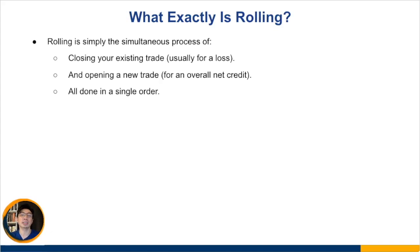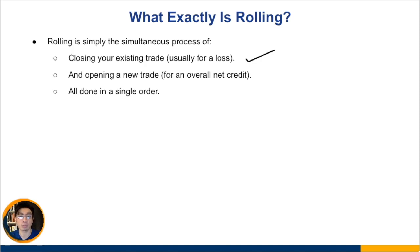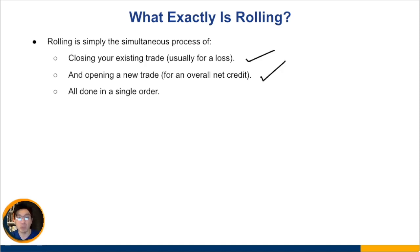Rolling is simply the simultaneous process of two things. The first is to close out your existing credit spread — this could be a bull put spread or a bear call spread. Usually it's when it's at a loss that you would consider rolling it, giving it more duration so the trade has a chance to work out. You close out your existing trade and then open a new trade for an overall net credit.